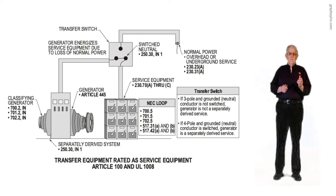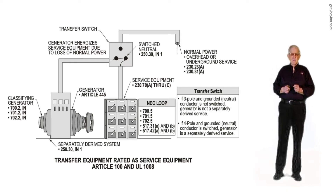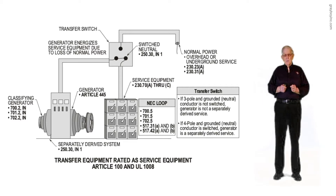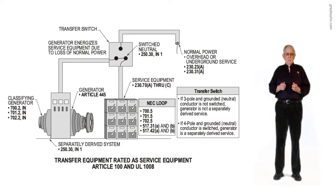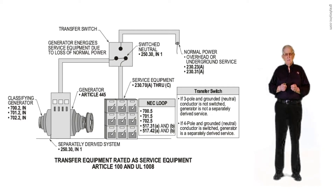The rules are found in Article 445. Reviewing the generator classification shown at the left in the illustration: an emergency generator, in accordance with 700.2 informational note, supplies certain loads for the generator to be classified as an emergency generator. 701.2 informational note lists the loads a generator supplies to be classified a legally required standby generator. 702.2 informational note lists the loads that an optional standby generator would supply.